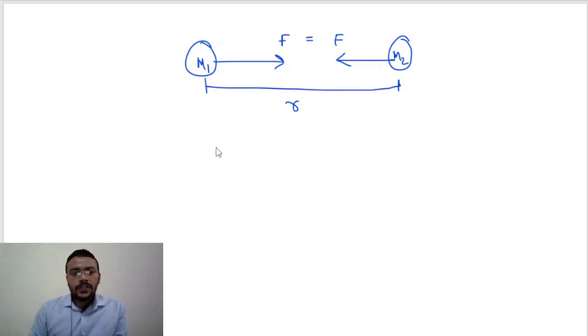And he also gives some relations for these forces. First relation is, he said that force is directly proportional to the product of masses of these two bodies. And the second relation he gives is, this force is inversely proportional to the square of the distance between these two bodies.